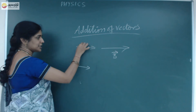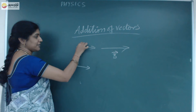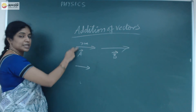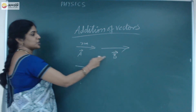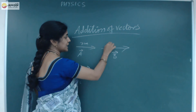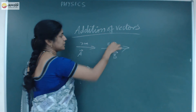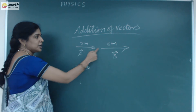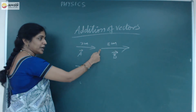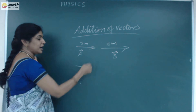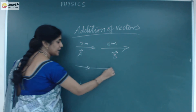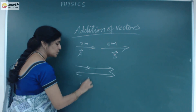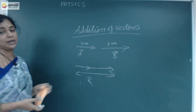For example, Vector A has a magnitude of 3 cm and the other vector has a length of 8 cm. I am going to find out the addition of these 2 vectors by joining the tail of one vector with the head of another vector. This total length gives you the resultant of these 2 vectors.